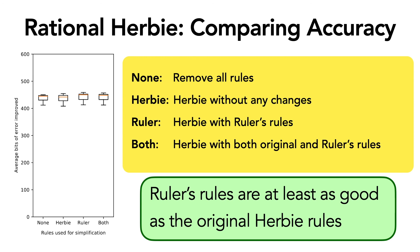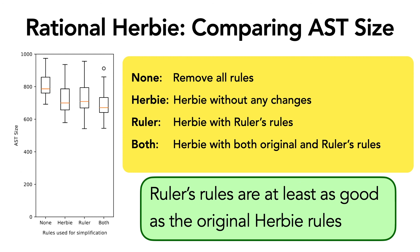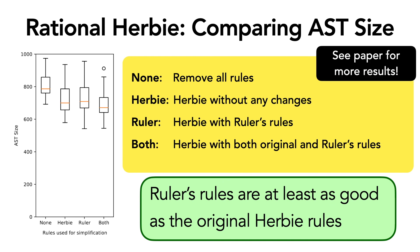First, we found that Ruler's rules do not reduce accuracy. This was actually really important because improving accuracy is the primary purpose of Herbie. So Ruler's rules are at least as good as original Herbie rules. We also found that even without affecting accuracy negatively, Ruler can actually find smaller outputs, which is useful for a synthesis tool like Herbie for making the outputs easier to comprehend. Our paper has more details on this experiment and much more on various sensitivity analyses we performed on Ruler's core algorithm.